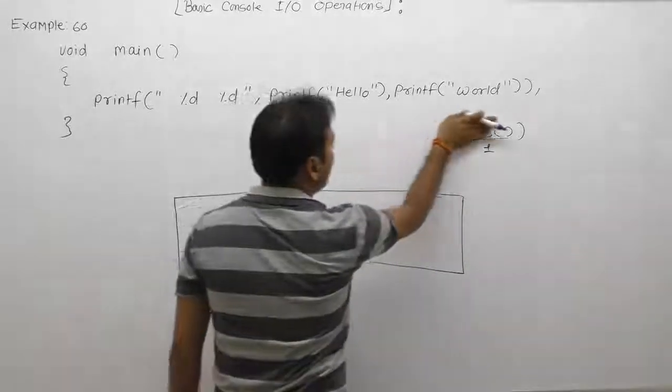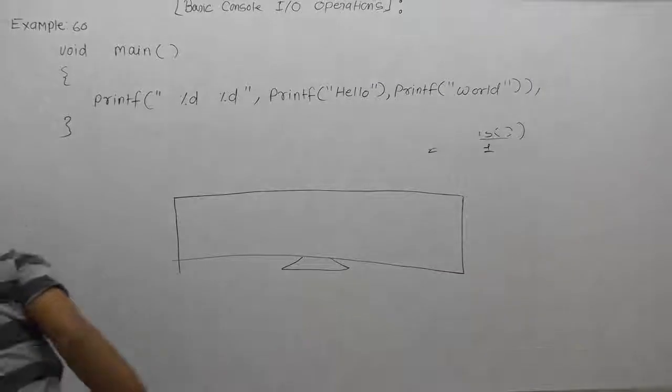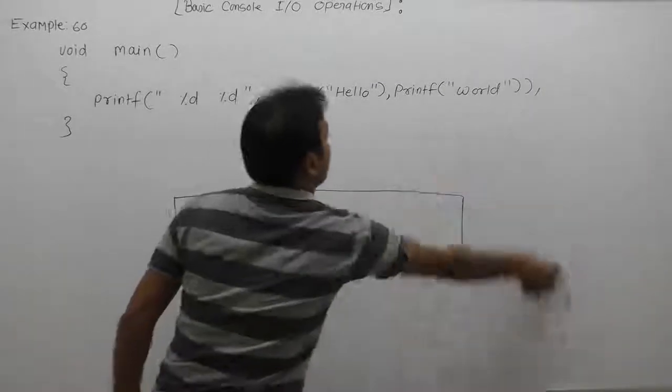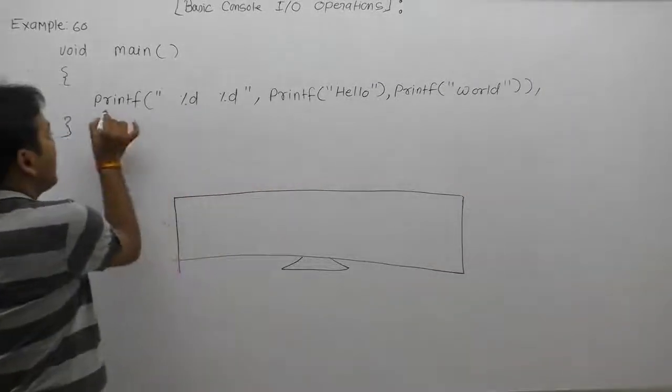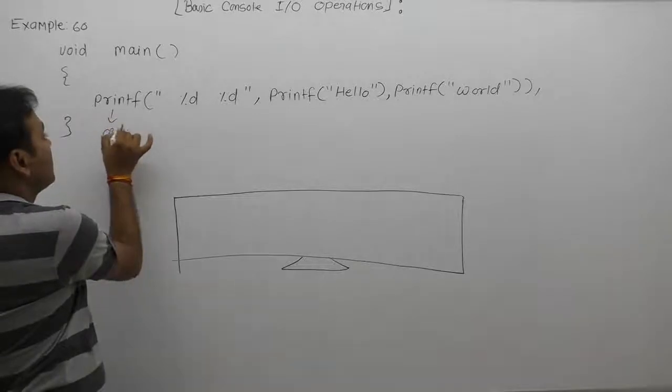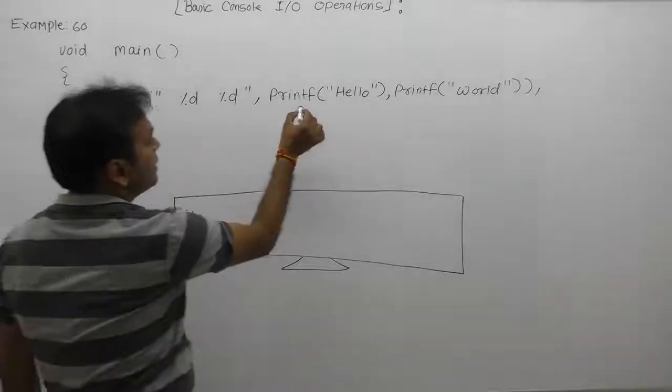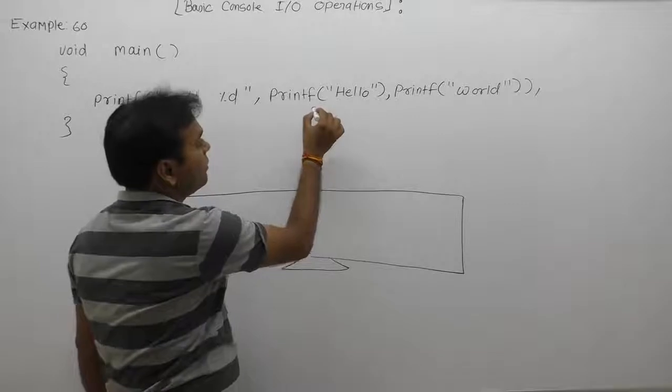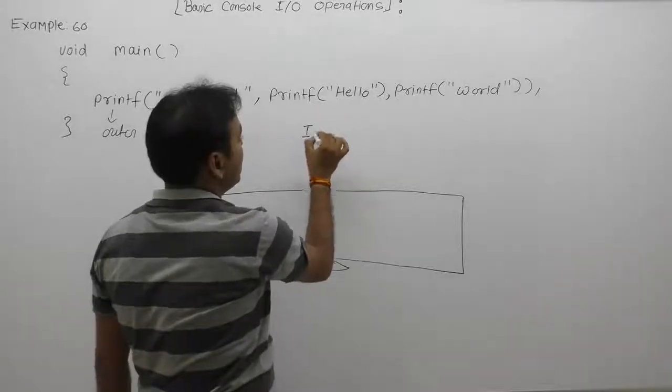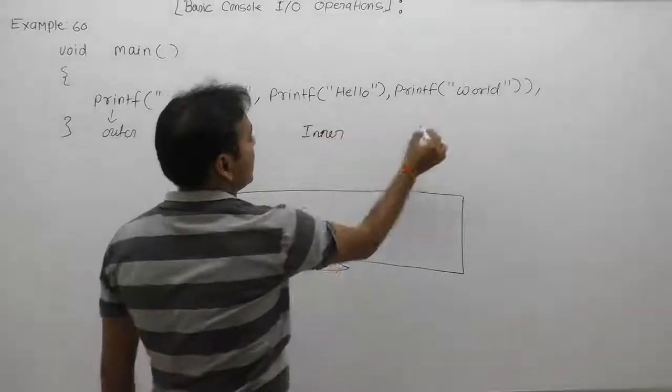As we are discussing, printf functions in nested form. Here printf is called in nested. This is outer printf and this one is inner printf. Inner printf is called two times. This one is inner. Again inner.